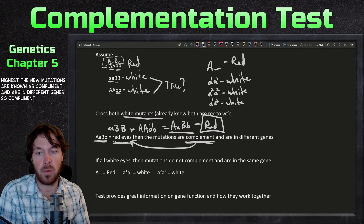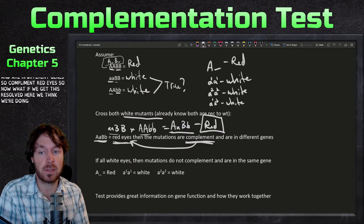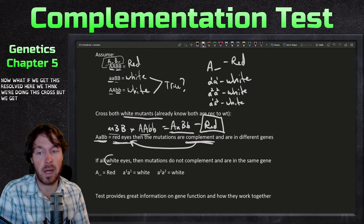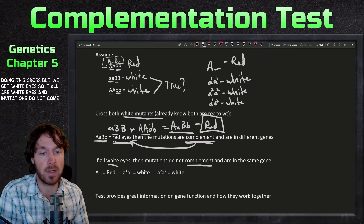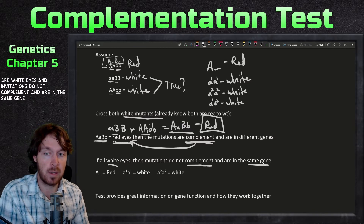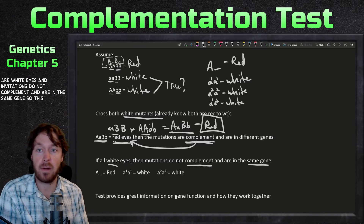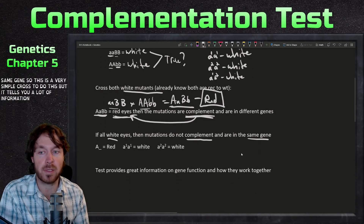Now, what if we get white eyes from this cross? If all progeny have white eyes, the mutations do not complement and are in the same gene. This is a very simple cross to perform, but it tells you a lot of information about what's happening genetically.